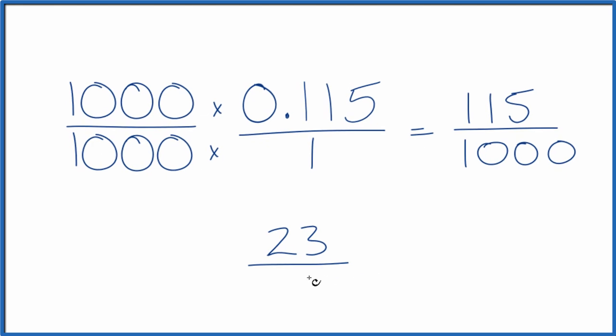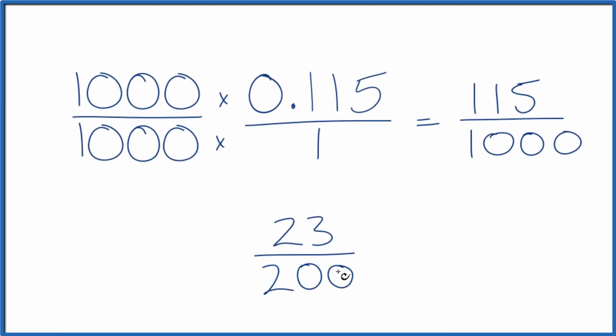5 goes into 1,000 200 times. So the decimal 0.115, that equals the fraction 23 over 200, or 115 over 1,000. And all these have the same value. If you divide 23 by 200, 115 by 1,000, you'll get the decimal 0.115. This is Dr. B. Thanks for watching.